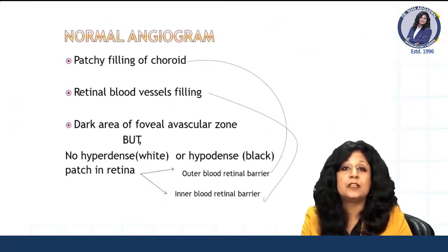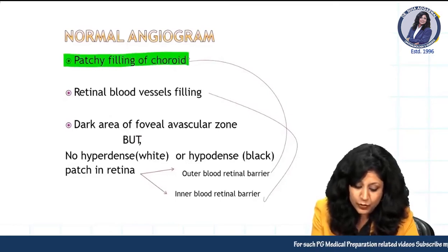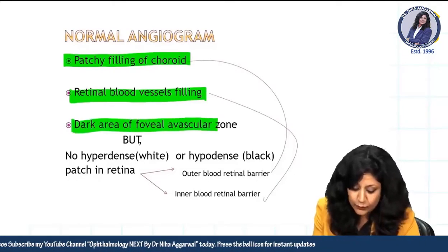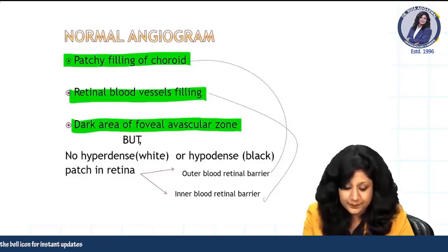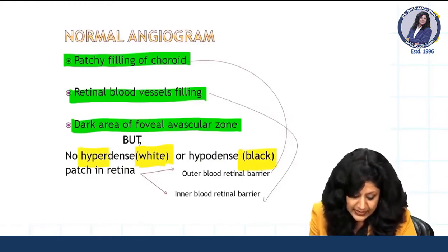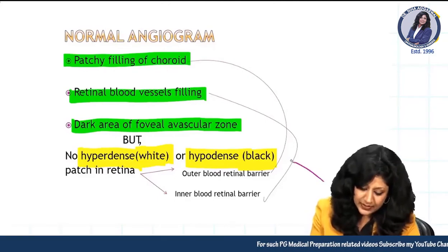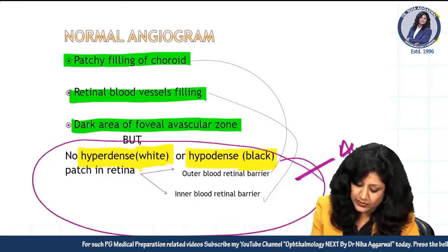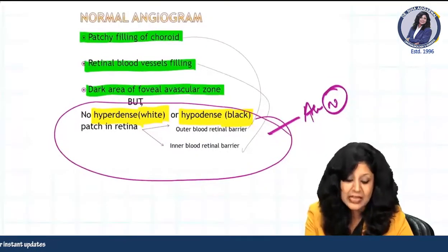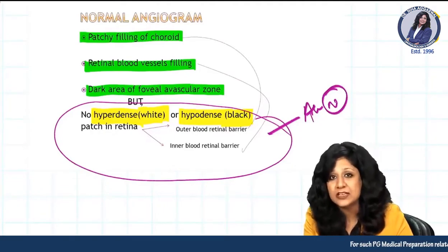On a normal angiogram you will see: patchy filling of the choroid due to lobules, retinal blood vessel filling, and a dark foveal avascular zone. There should be no hyperfluorescent or hypofluorescent areas. If you are seeing white areas (hyper) or black areas (hypo), that means it is abnormal. Normally you get a greyish-white color from choroidal fluorescence via the fenestrated chorocapillaries.